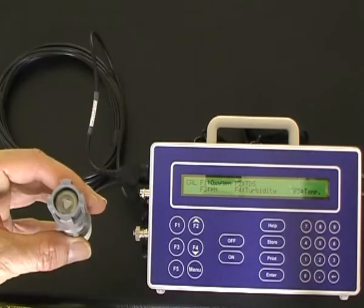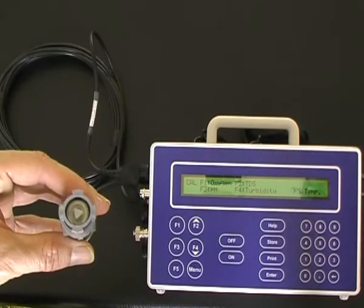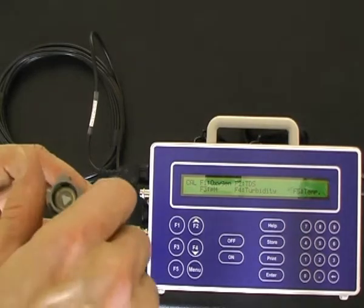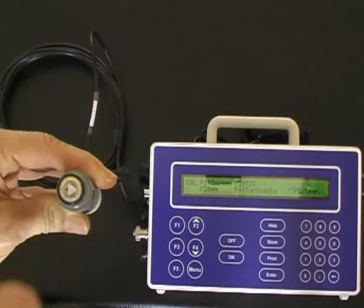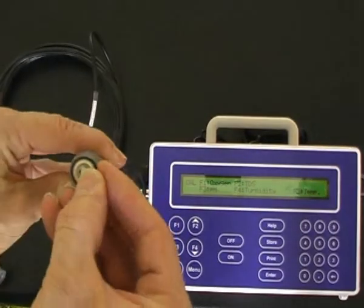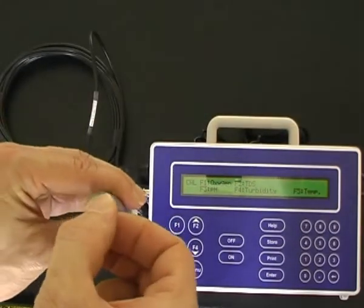The dissolved oxygen sensor must first be prepared for measurement. Remove the guard over the membrane, then remove the O-ring and the Teflon membrane.